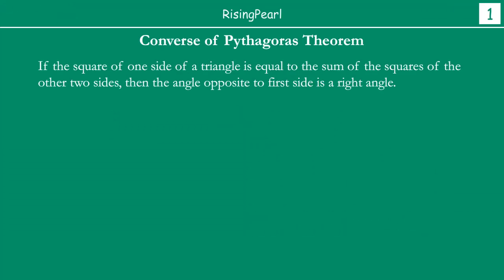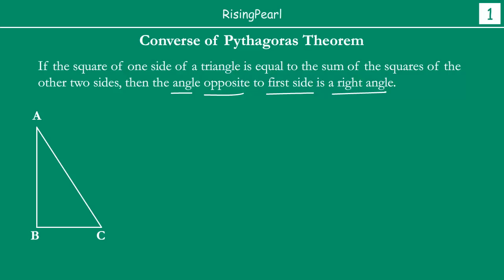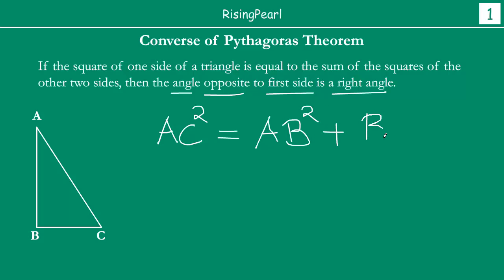We will be given: if the square of one of the sides of a triangle is equal to the sum of squares of the other two sides, then we want to prove that the angle opposite to the first side is a right angle. That means we will be given a triangle such that AC² = AB² + BC².